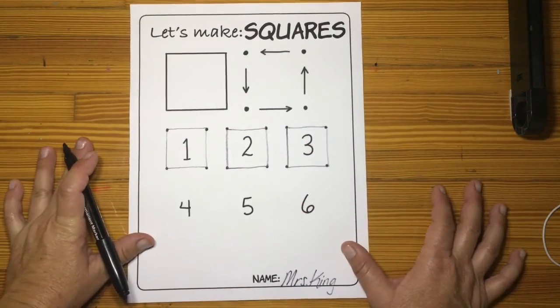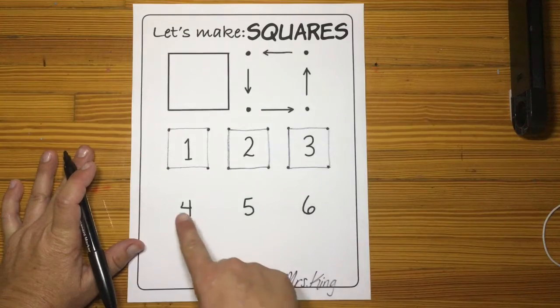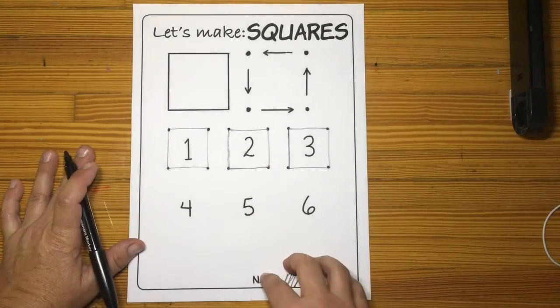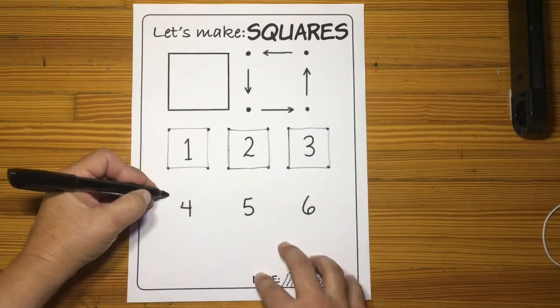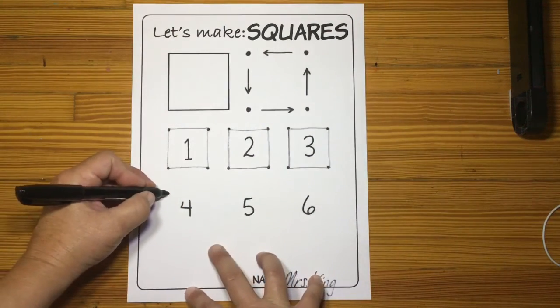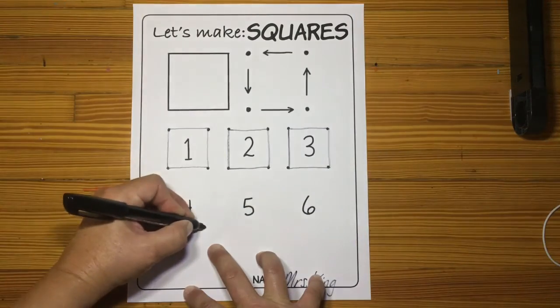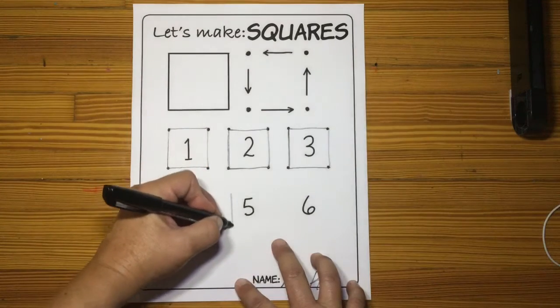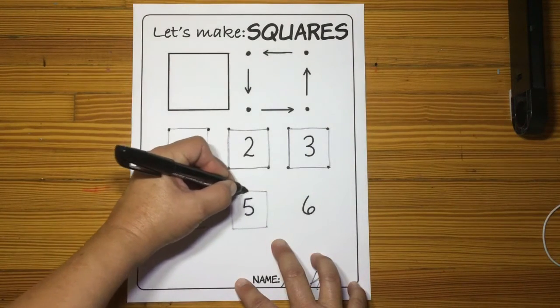Now just like the circle and triangle, four, five, and six, there's no dots. You're gonna have to make your own. So what I'm going to do is I'm going to start on this side of the four. Ready? One, two, three, four. One, two, three, four.